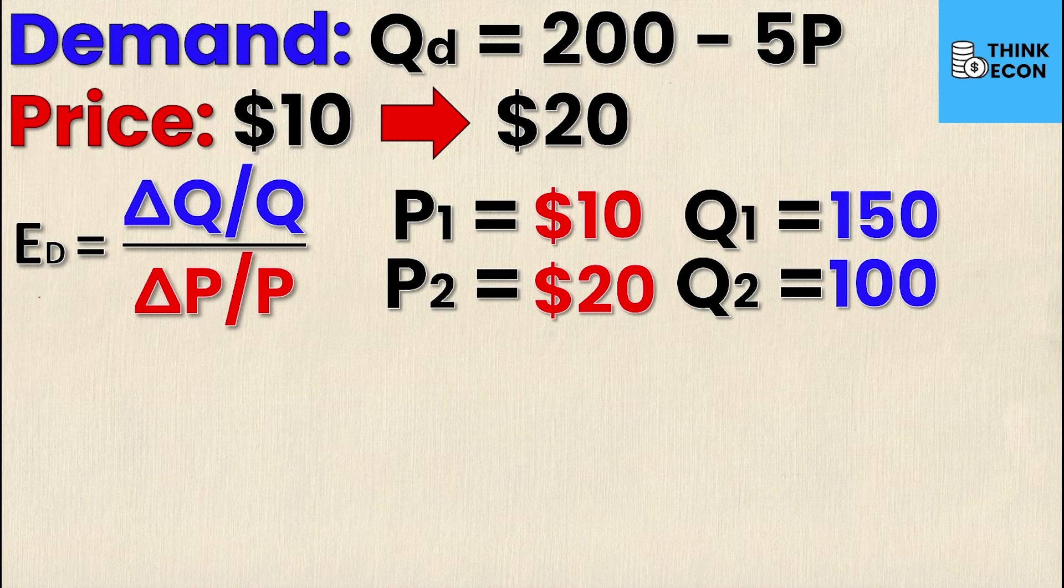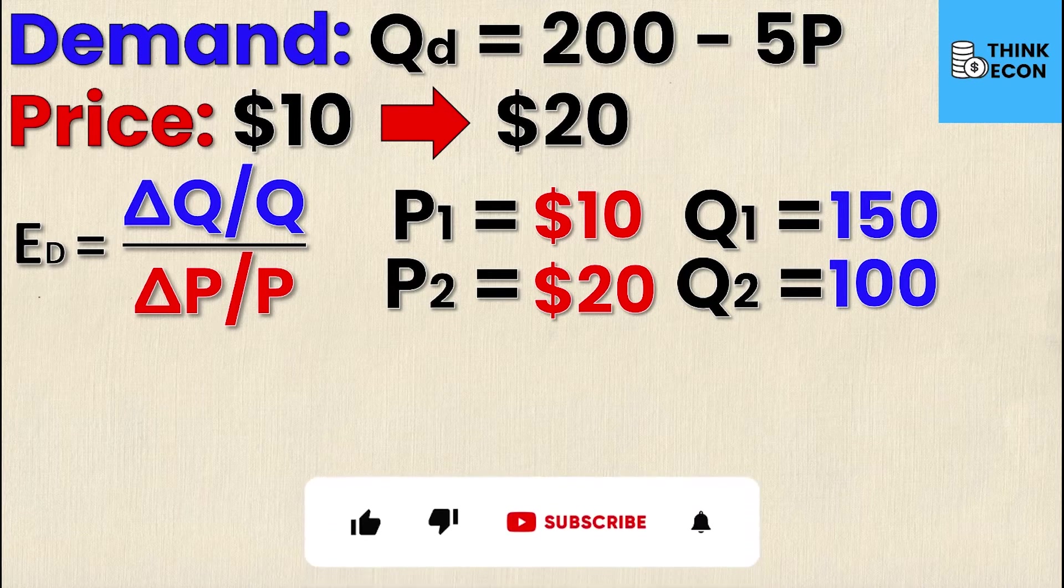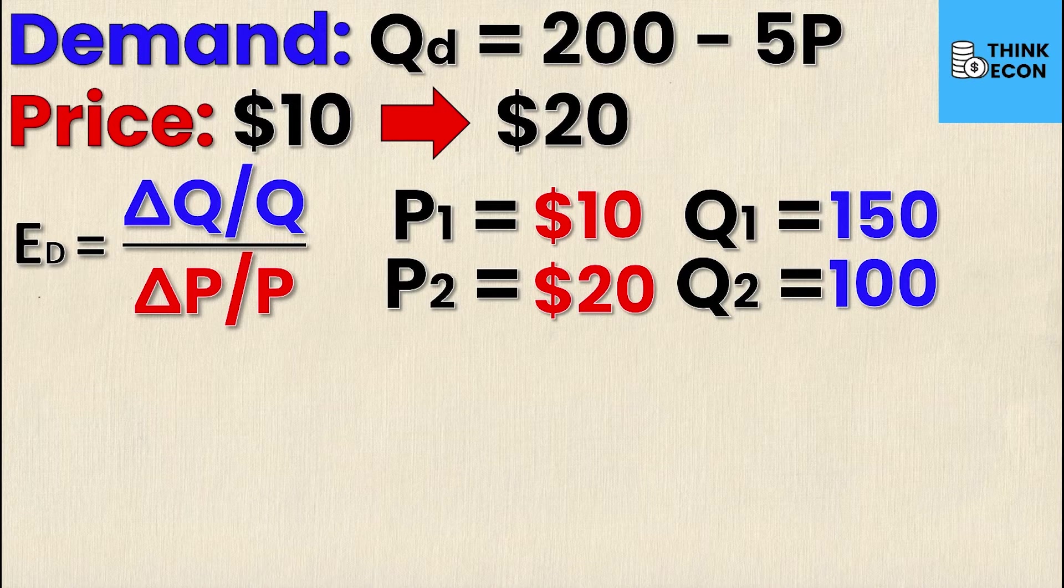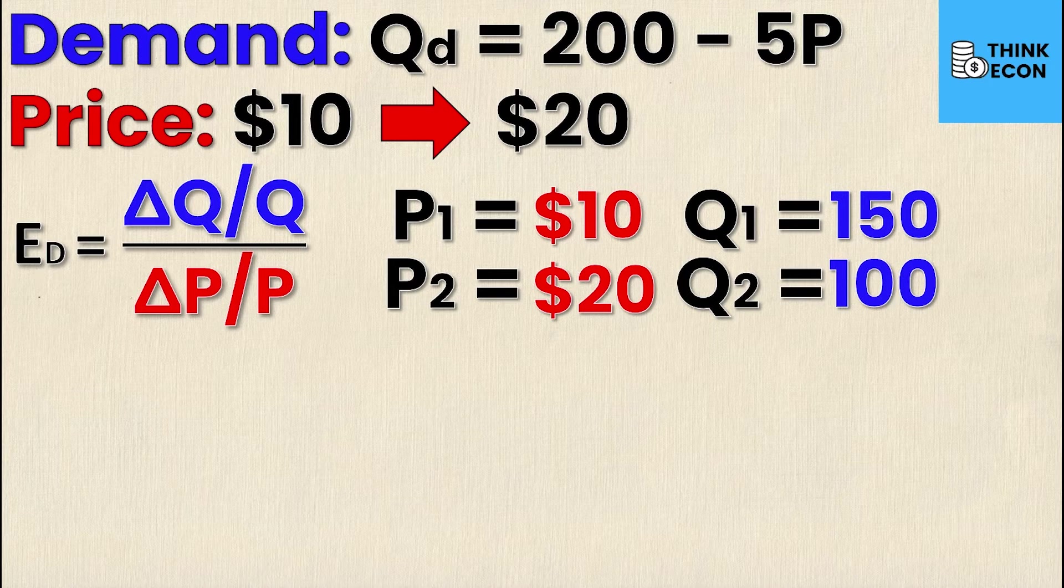Now you might be looking at the elasticity formula saying that looks like percentage change, and it is. If you want a detailed video on how to calculate all four types of elasticity, we have a video for each type on our channel. To calculate percentage change, I'll explain it like I have in other videos: it's new minus old over old. That's the same as the change in Q divided by Q, or the change in P divided by P.